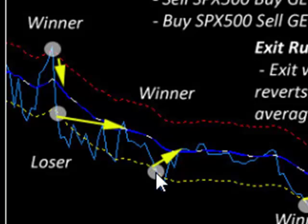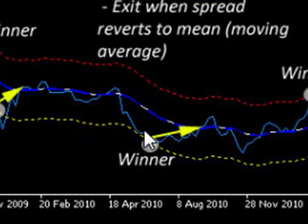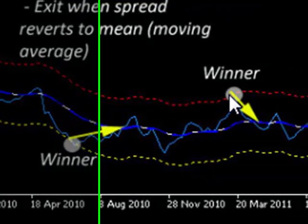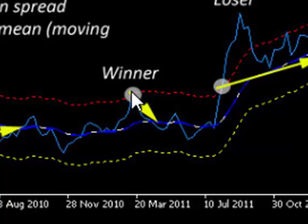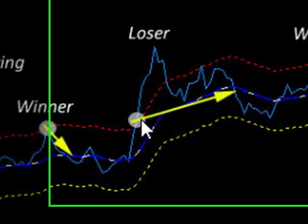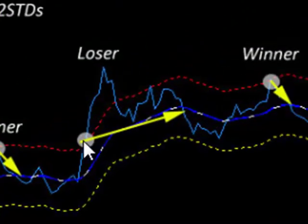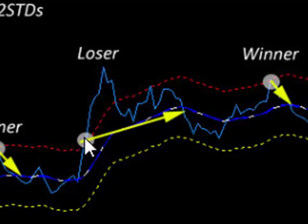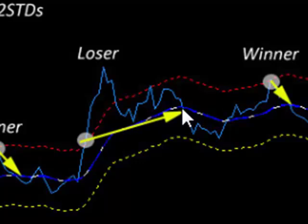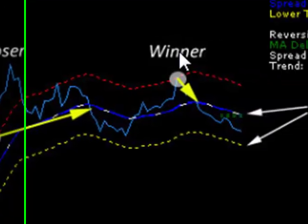The third trade would have been a winner. Fourth trade would have been a winner. Fifth trade would have been a winner. Sixth trade would have been a loser — same reason again: we would have sold the S&P 500 and bought the DAX on the basis that the spread would weaken. But in actual fact, the moving average spread strengthened and our exit was actually higher than our entry point. And the final trade was, again, a winner.